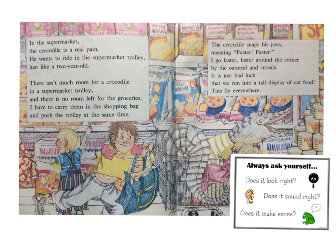I know what it is — it's trolley. In the supermarket, the crocodile is a real pain. He wants to ride in the supermarket trolley, just like a two-year-old. There isn't much room for a crocodile in the supermarket trolley, and there is no room left for the groceries. I have to carry them in the shopping bag and push the trolley at the same time. The crocodile snaps his jaws, meaning faster, faster. I go faster, faster around the corner.